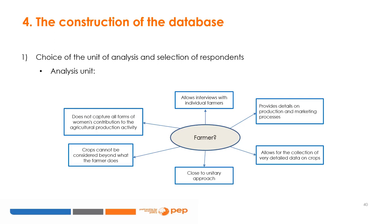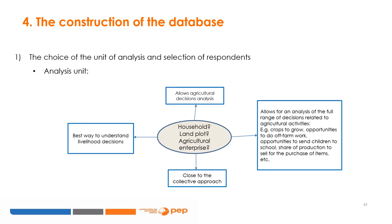As for the choice of the unit of analysis, this can be the farmer himself. By doing so, one should be sure to interview individual farmers, obtain details on production and marketing processes, and collect very detailed data on crops. However, by using the farmer as the unit of analysis, one is less certain of capturing all forms of women's contribution to agricultural production, one is close to the unitary approach, and one is limited because crops cannot be considered beyond what the farmer does. Alternatively, the unit of analysis can be the household, land plot, or agricultural enterprise. Using one of these units is the best way to understand livelihood decisions, allows for the analysis of the full range of decisions related to agricultural activities, and is close to the collective approach.